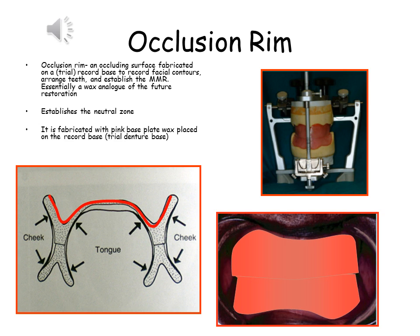An occlusion rim is an occluding surface fabricated on a trial record base to record facial contours, arrange teeth, and establish the MMR. It is essentially a wax analogue of the future restoration. It establishes the neutral zone. It is fabricated with pink base plate wax placed on the trial denture base to an average anatomic dimension, and then refined to fit the patient at chairside.